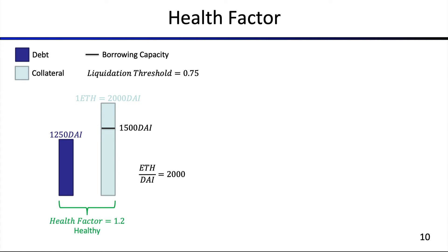Let's go through a very concrete example of the health factor. We will collateralize one ether, and the exchange rate between ether and DAI is 2000 at the very start of this position. The collateral value means the borrowing capacity we can get is at maximum 1500 DAI. In this particular example, we set the liquidation threshold to 0.75. Given these numbers, we can calculate that the health factor at this particular instance is 1.2, at the very beginning of the borrowing position.